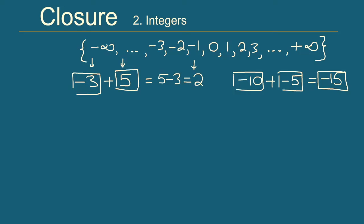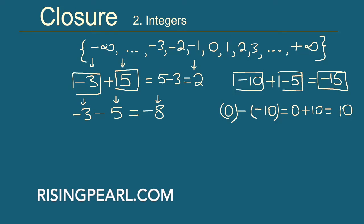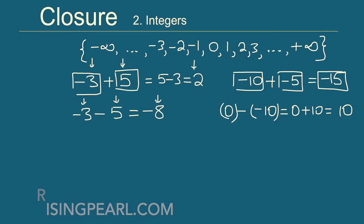What about subtraction? Take minus 3 and subtract 5 from it: minus 3 minus 5 is minus 8, an integer. One more example: take 0 and subtract minus 10 from it — that is 0 minus minus 10, or 0 plus 10, which is 10, an integer. When we subtract two integers we always get an integer, so integers are closed under subtraction.